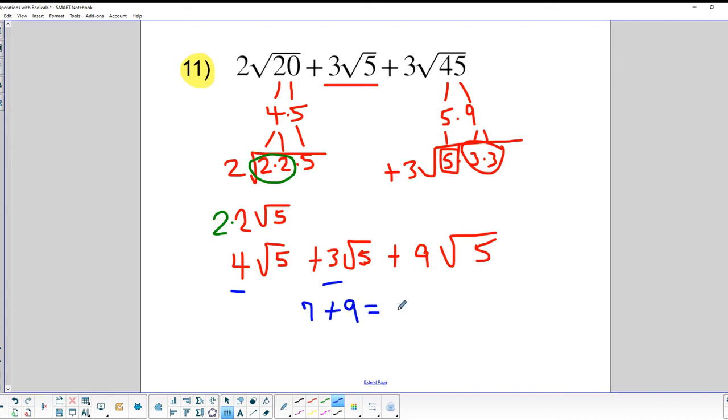Now we do have like terms. We have 4 plus 3, which is 7, plus 9. That equals 16. So our final simplified radical is 16 square roots of 5.